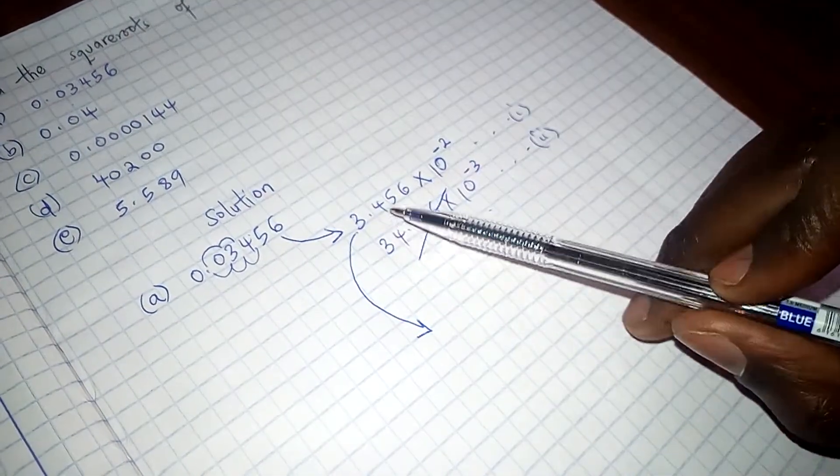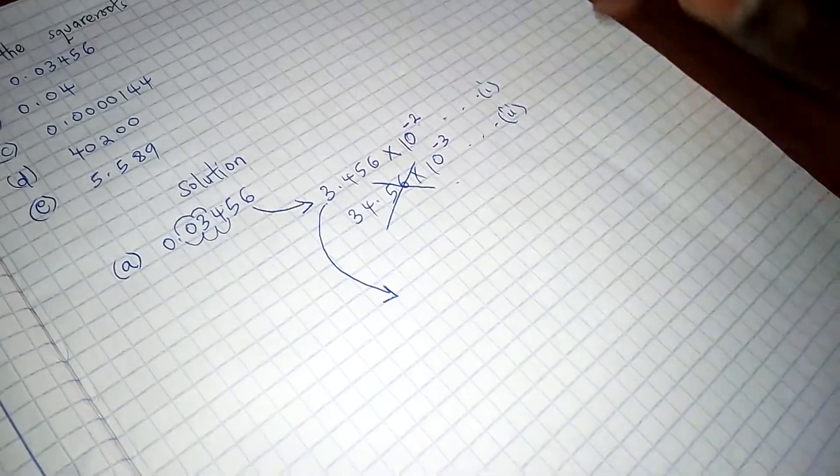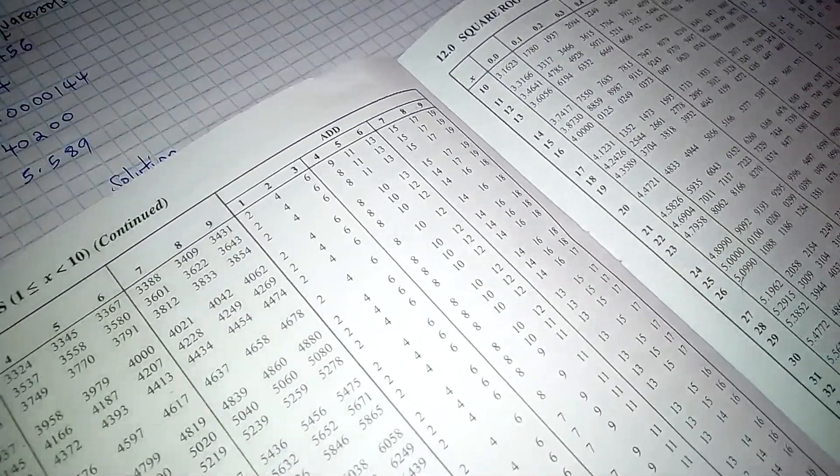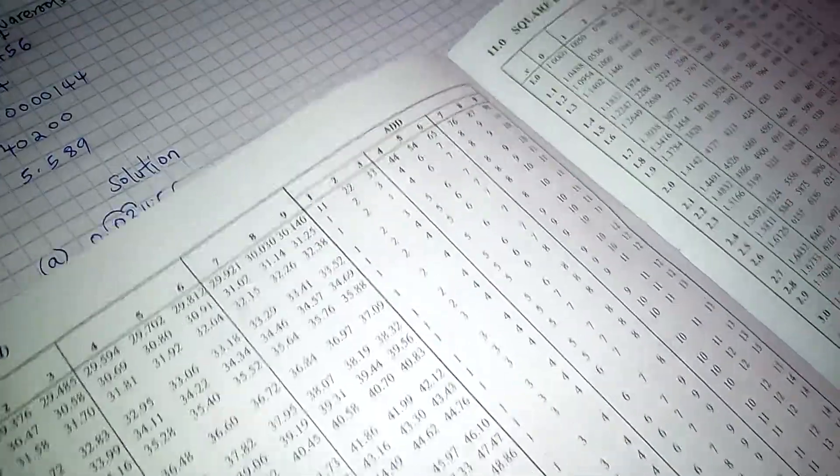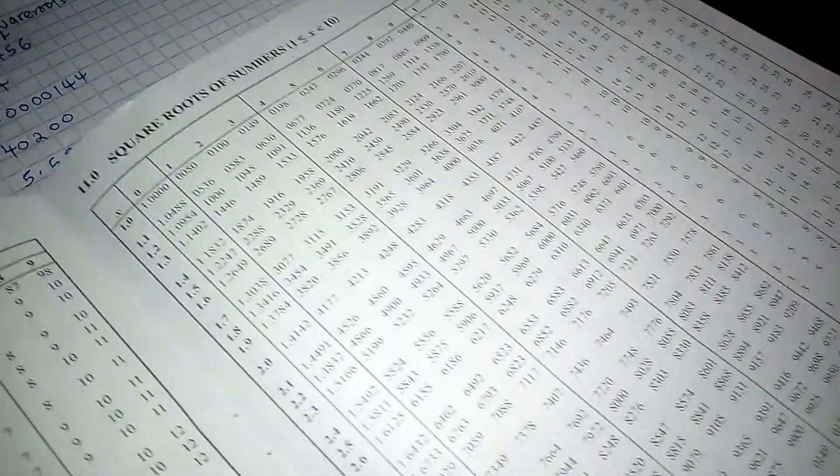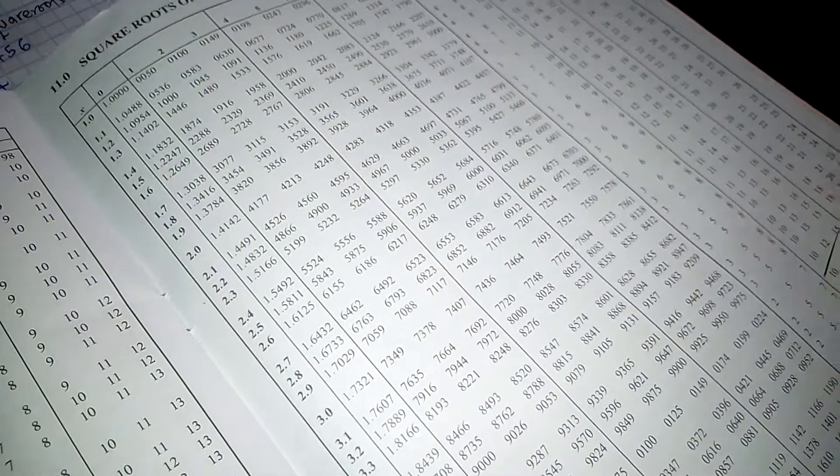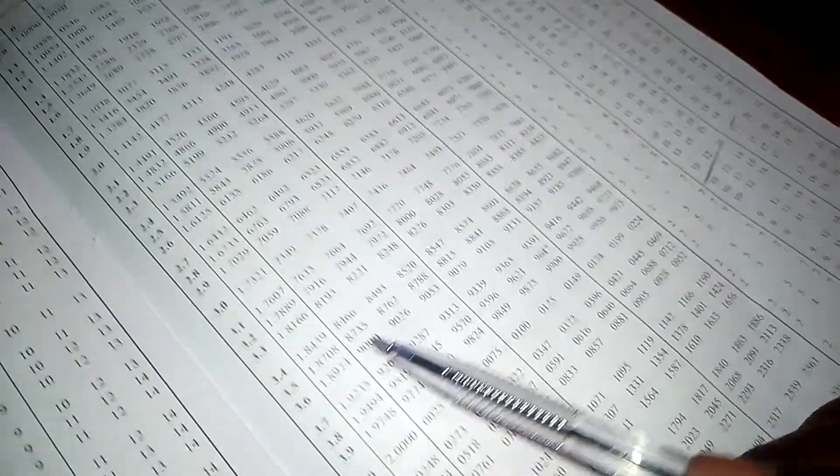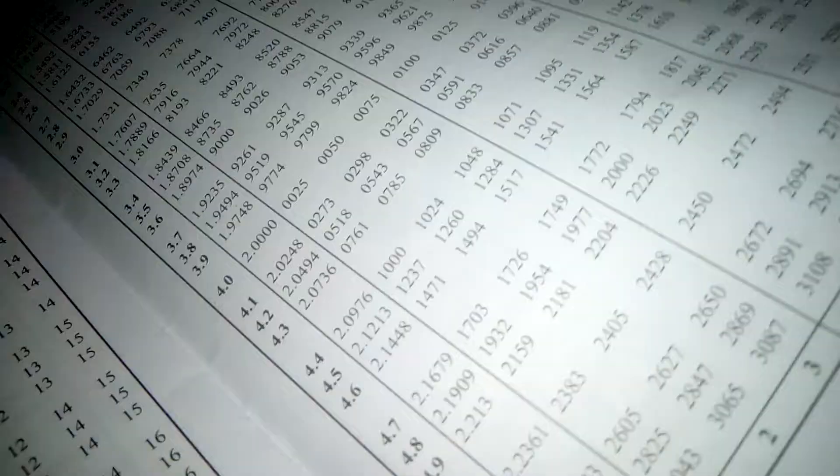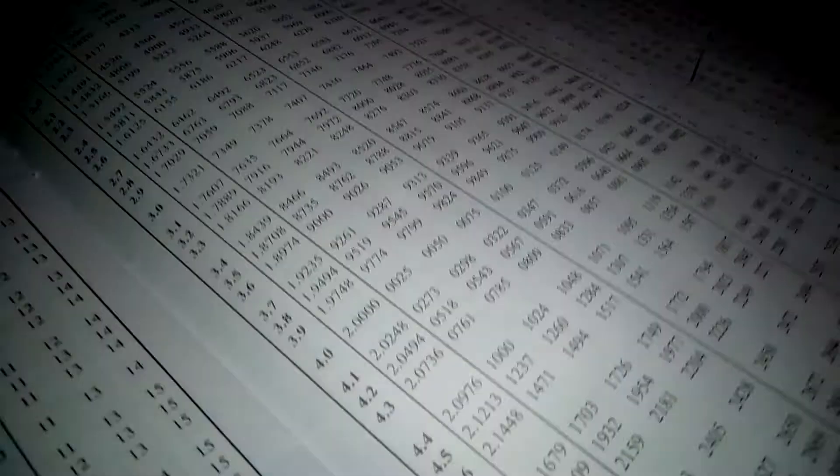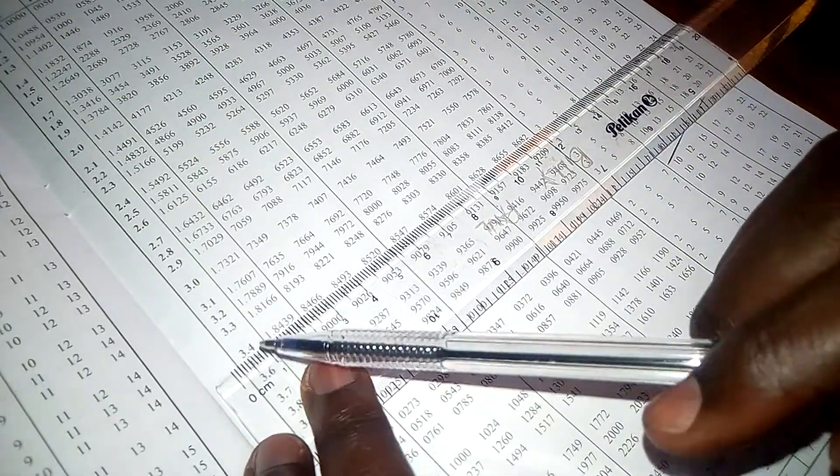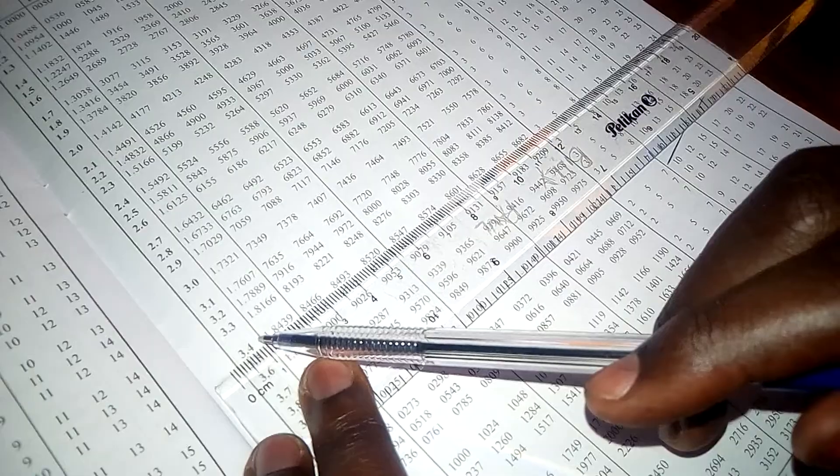So how do we get the square root of 3.456 from the table? We come to tables of square roots. Then we look at 3.456. So we have 3.456.